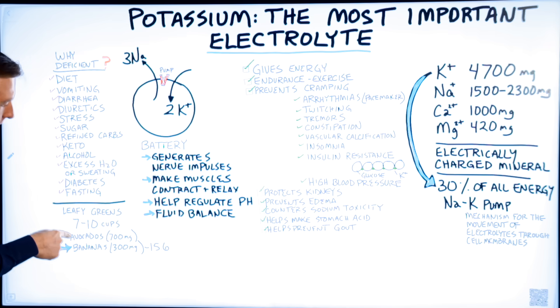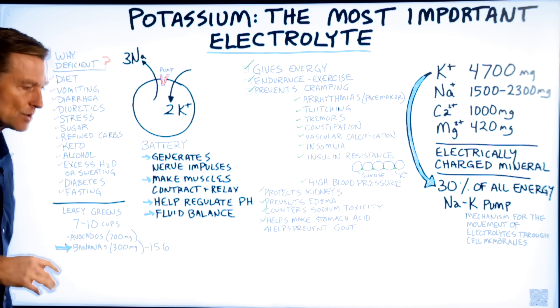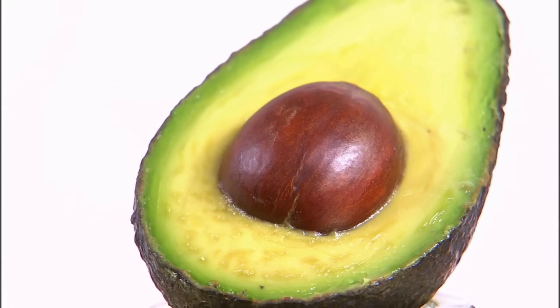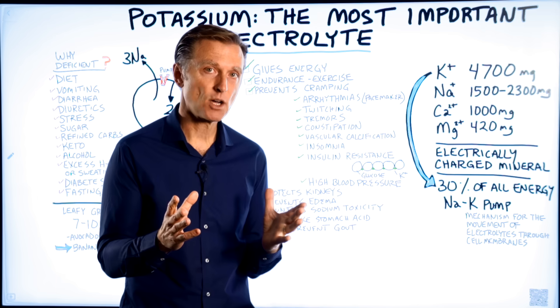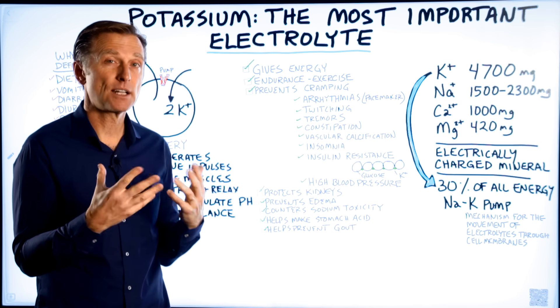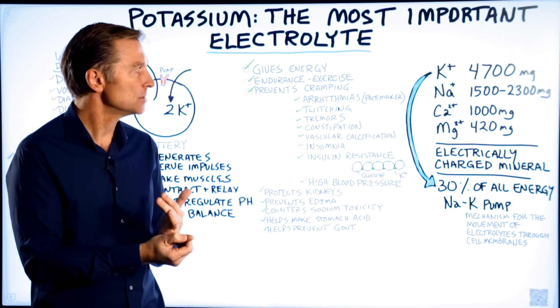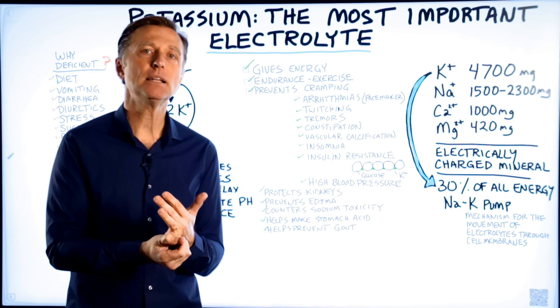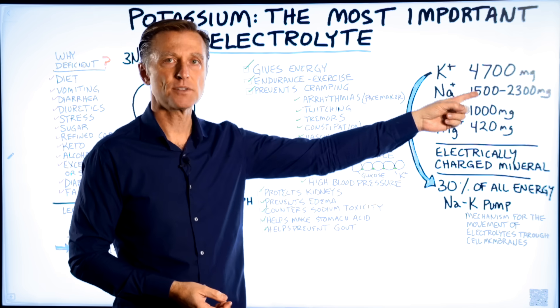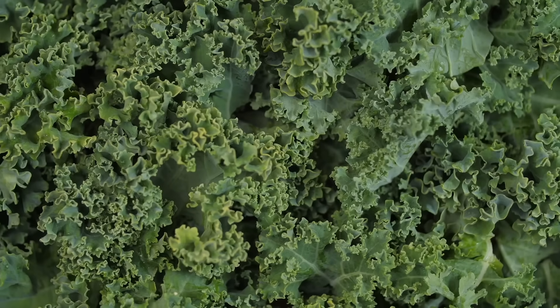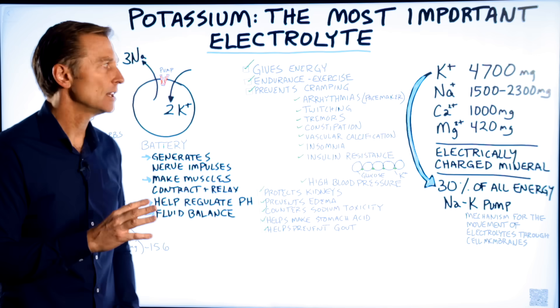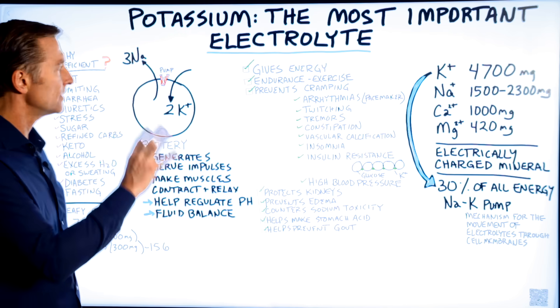Now, avocados are loaded with potassium. One avocado is roughly about 700, sometimes 800 milligrams of potassium. So avocados are really good. Now, I don't recommend going out and getting a potassium supplement unless there's a higher amount of potassium like an electrolyte powder, because typically the supplements for potassium only come in 99 milligrams. So you would need like 47 pills every single day, and that's not very practical. So I recommend you try as much as you can to get it from your diet or get a good electrolyte powder that has enough of these electrolytes.